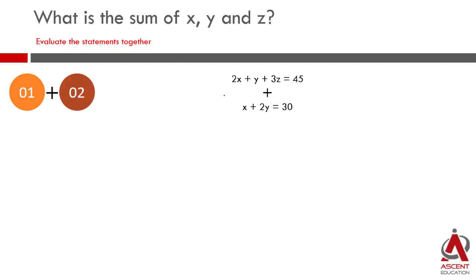In this case, there are three variables: x, y, z. Usually, three variables need three equations to solve for each value individually. We have only two equations. So the temptation is to say that the two statements together are not sufficient. But hold on, we need the value of x plus y plus z. If we are able to find out what is x plus y plus z, we still have an answer.